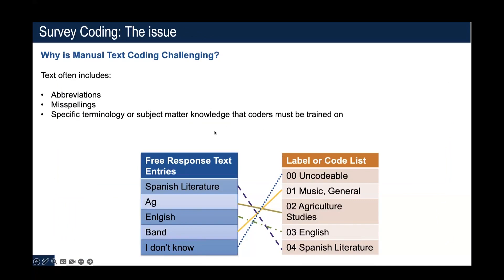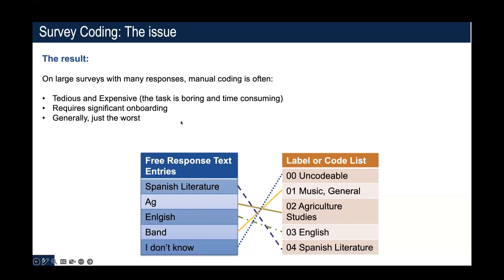It can be really challenging to do this kind of thing. You need to have some subject matter knowledge about how someone might fill in a response. People might use abbreviations, misspellings, or a colloquialism for the term you're looking for. That makes it difficult and requires you to have people who know the area and know what they're trying to code. And you're also sitting down and just coding things over and over again — generally it's just not very fun.